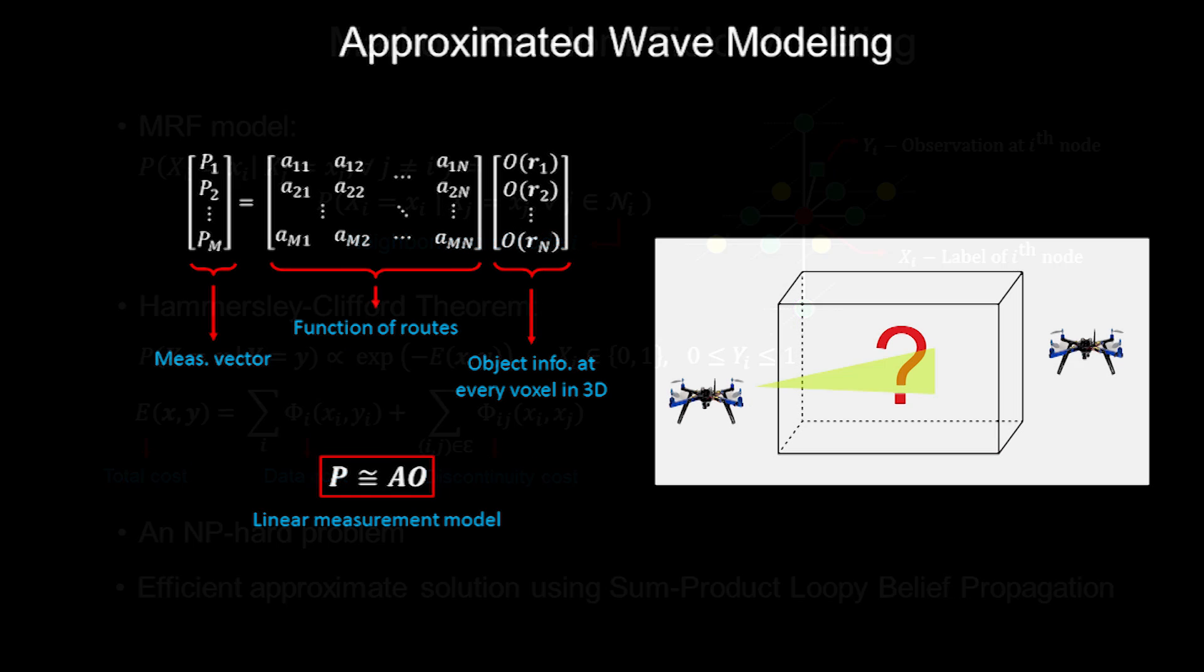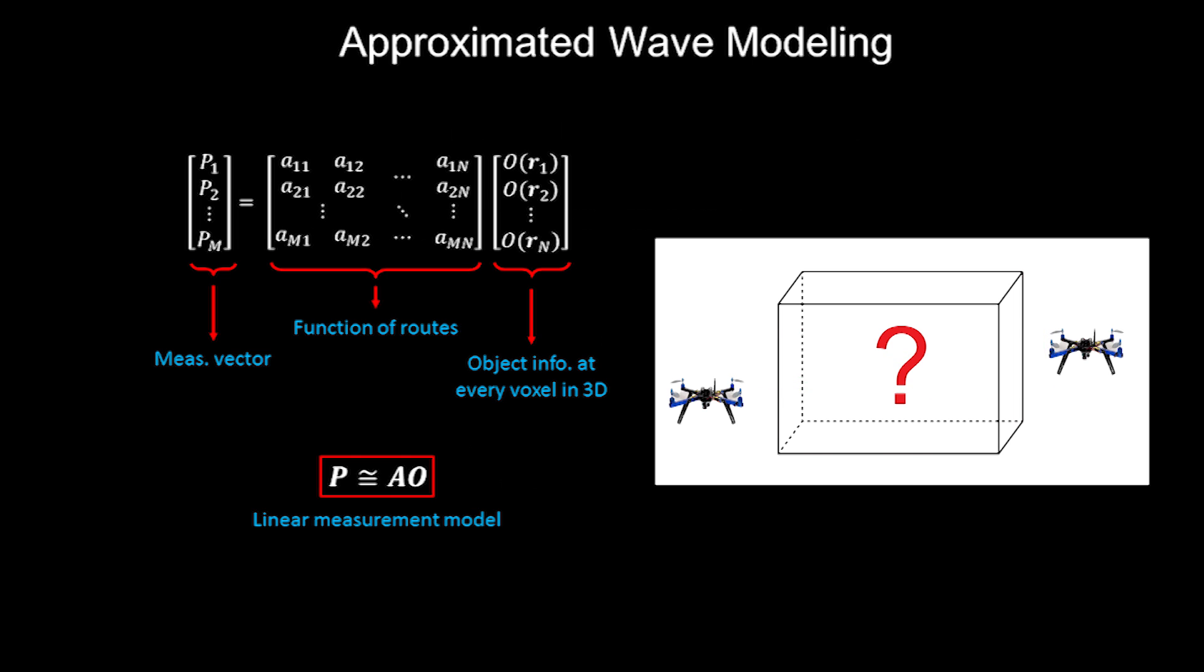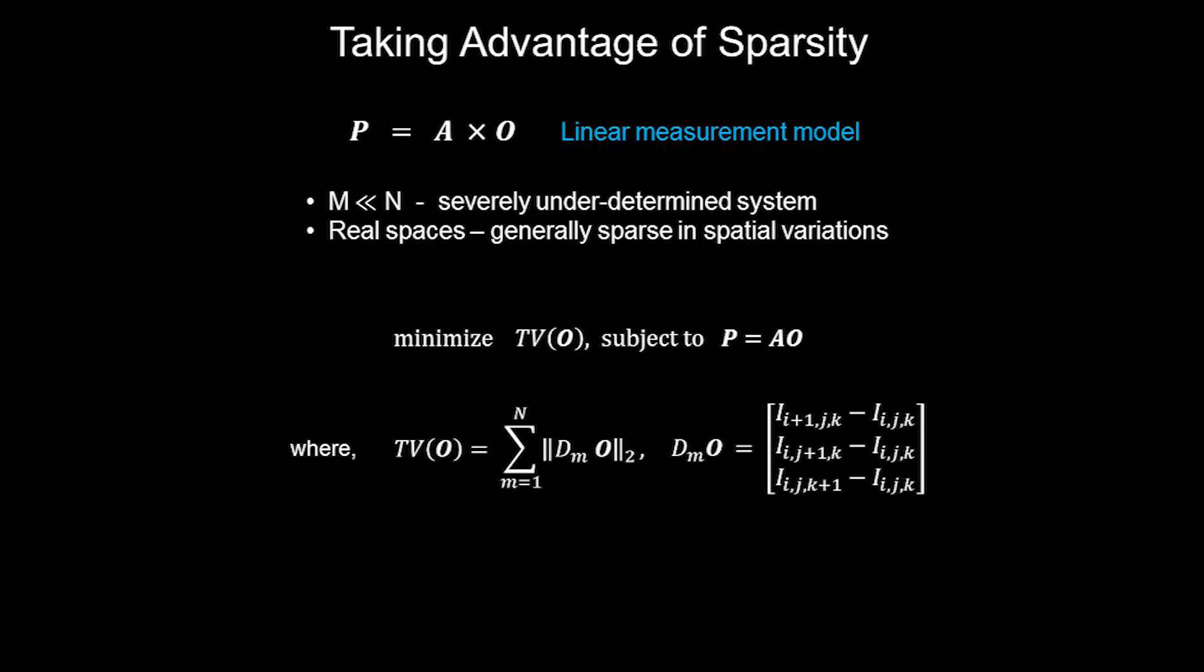For the modeling of the interaction of the transmitted wave with the area of interest, we use an approximated wave model that results in a linear expression. We finally take advantage of the fact that while we're dealing with an extremely large number of unknowns, the signal of interest is compressible in its information content.